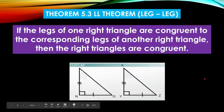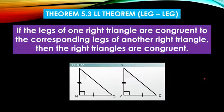After our warm-up, let's analyze our LL theorem or leg-leg theorem. This is applicable only to right triangles. If the legs of one right triangle are congruent to the corresponding legs of another right triangle, then the right triangles are congruent.